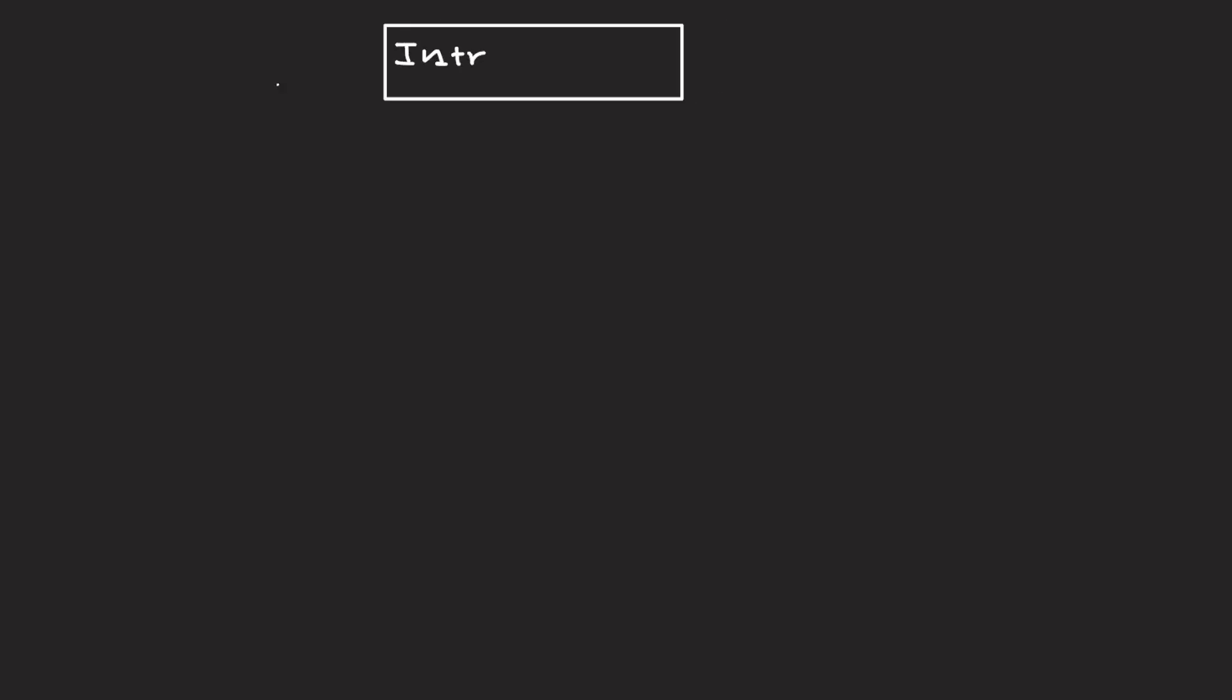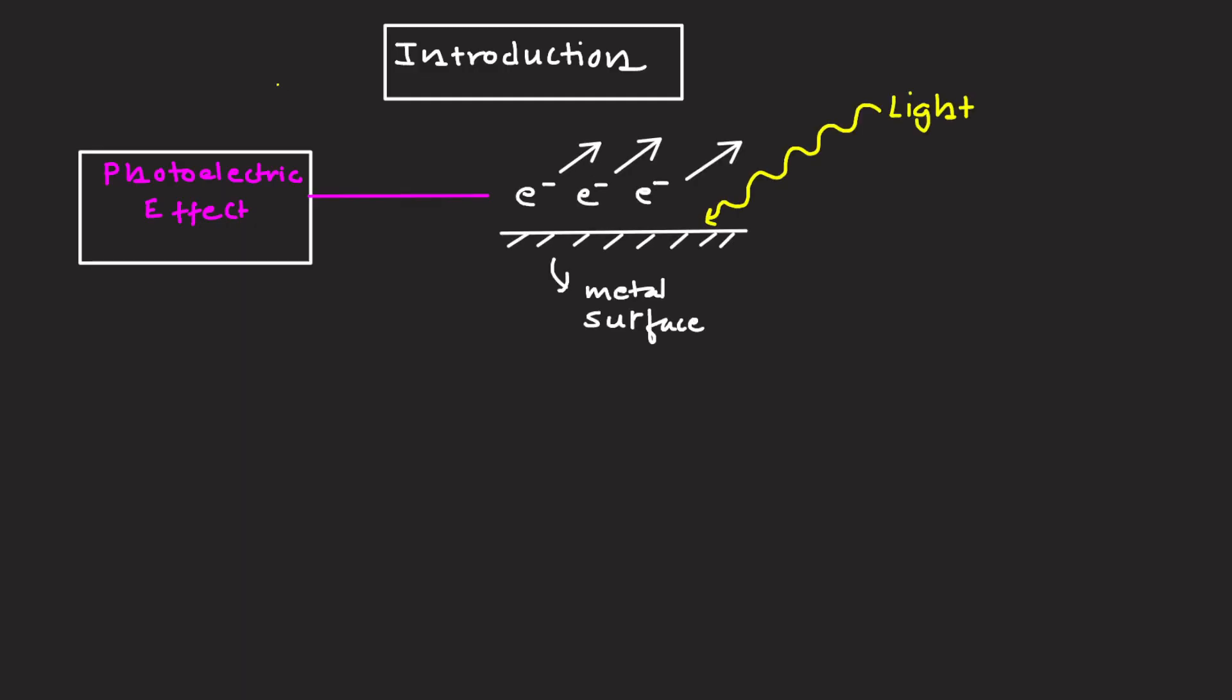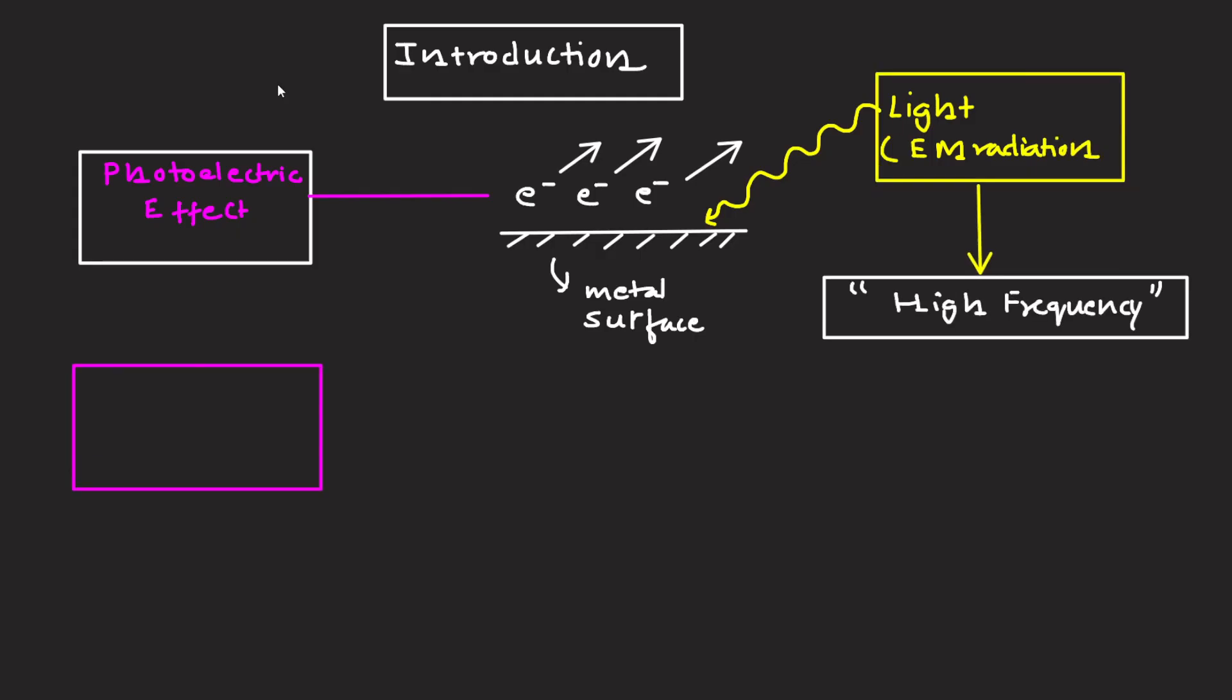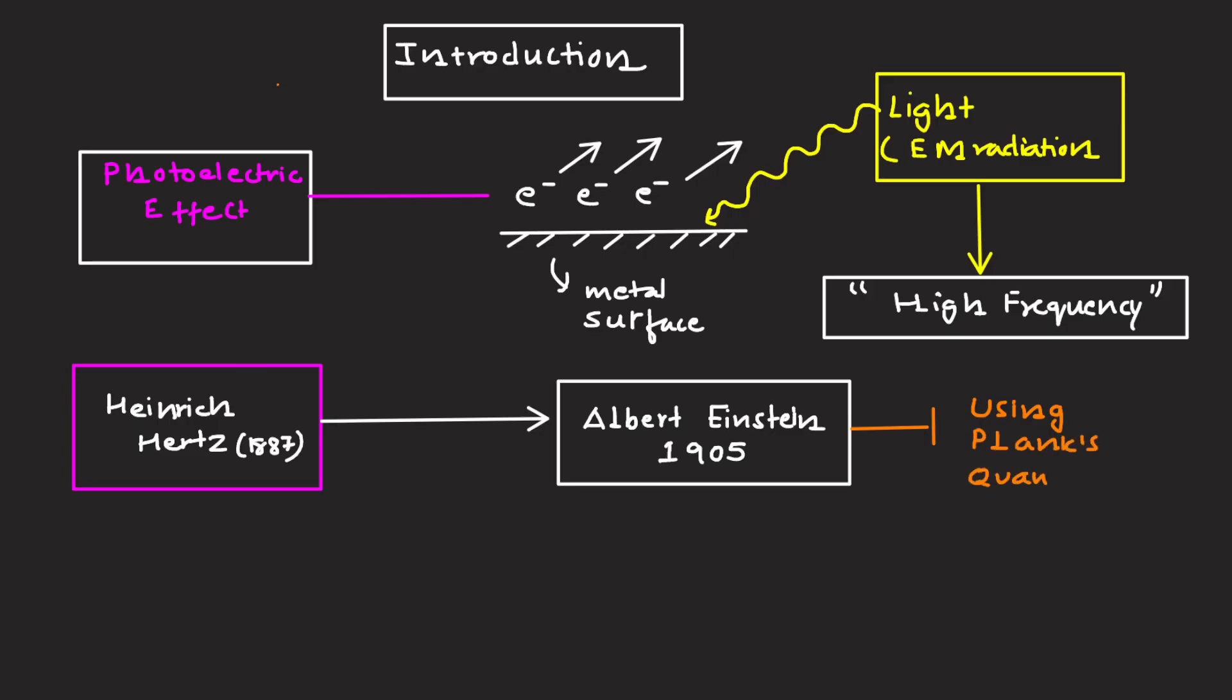Introduction. The photoelectric effect is a phenomena in which electrons are ejected from a metal surface when it is exposed to light, which is electromagnetic radiation of sufficiently high frequency. This effect was first observed by Henrik Hertz in 1887 and later explained by Albert Einstein in 1905 using Planck's quantum theory. It became one of the strongest pieces of evidence that light behaves not only as a wave but also as a stream of particles which we call photons.